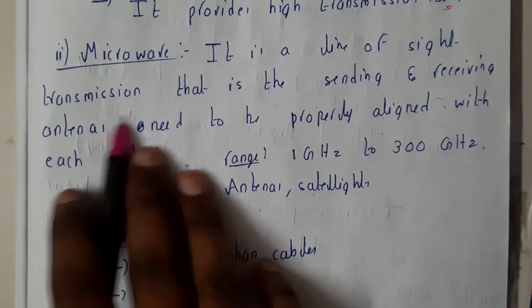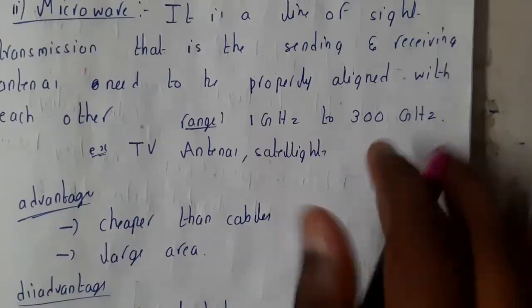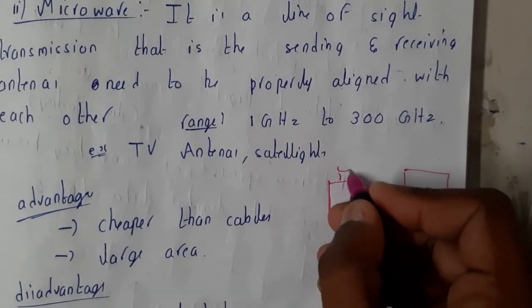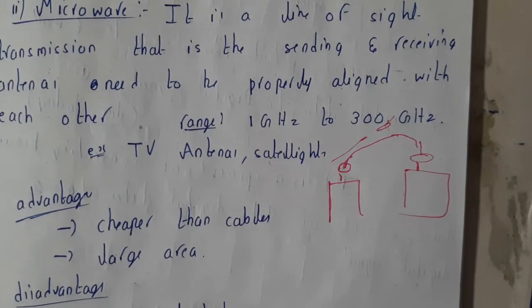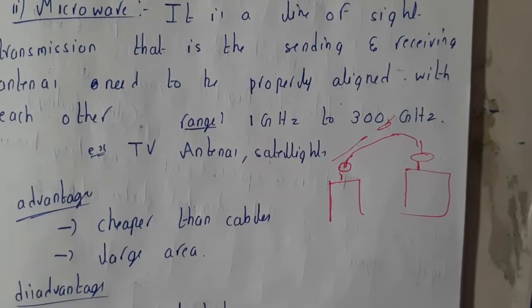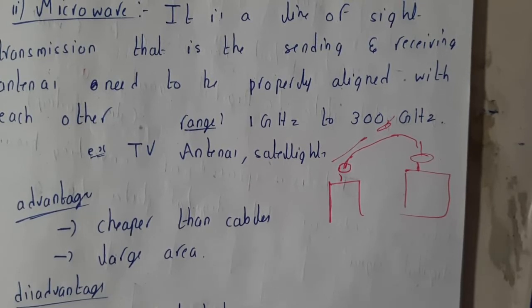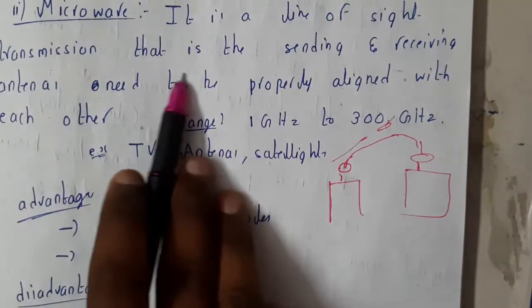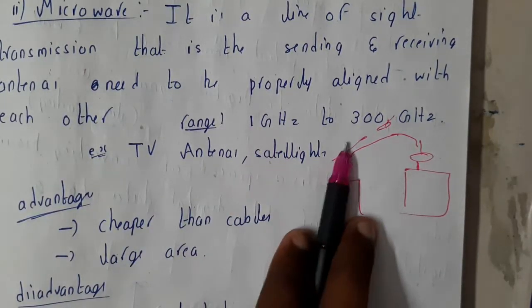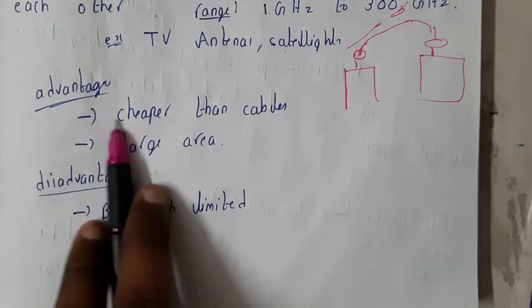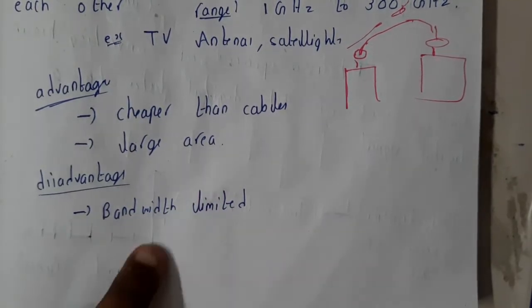Microwave signals use line-of-sight transmission — from sender antenna to receiver antenna. Antennas placed on top of buildings send transmission data to other antennas or satellites. The antennas must be precisely aligned for efficient transmission, which is why older TVs had rooftop antennas that needed manual adjustment. The frequency range is 1 GHz to 300 GHz; examples include TV antennas and satellites. This medium is relatively cheap and suitable for larger areas, but bandwidth is limited.